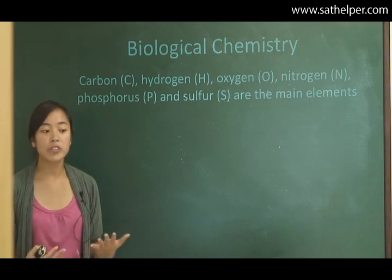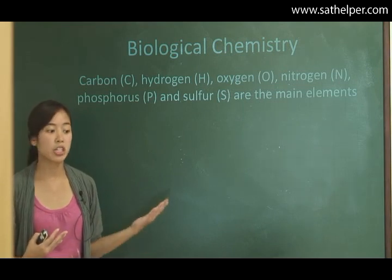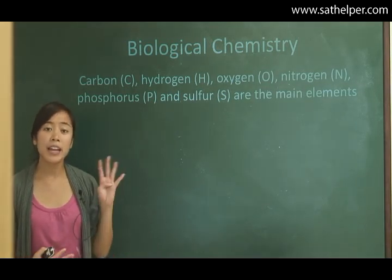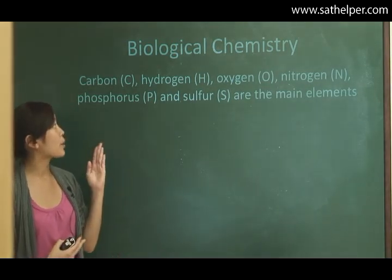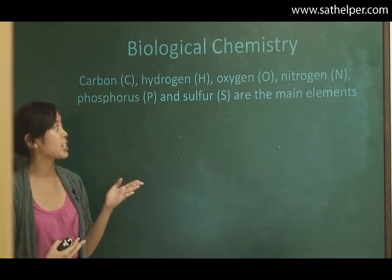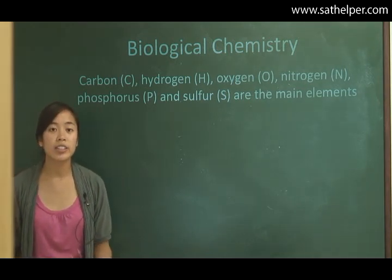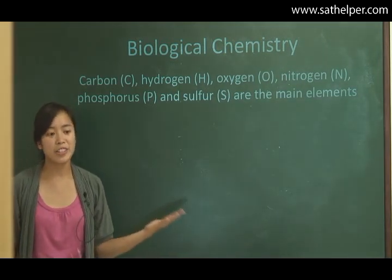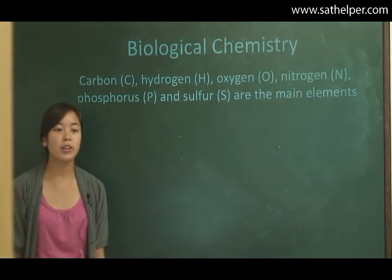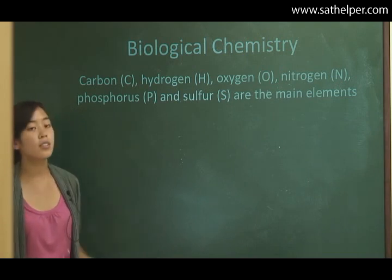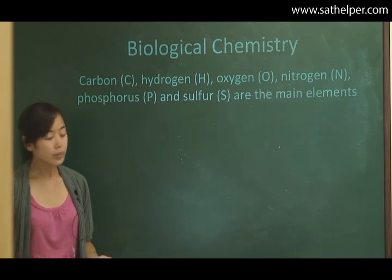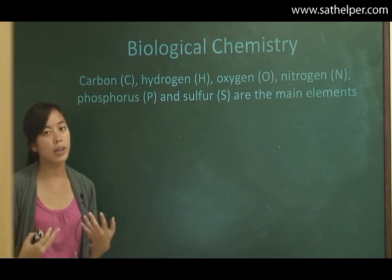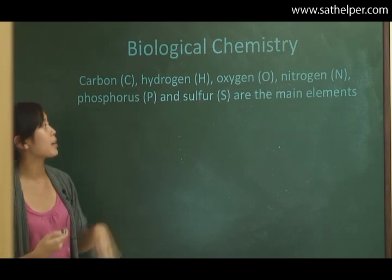Carbon, hydrogen, oxygen, nitrogen, phosphorus, and sulfur are the main elements. The main four are actually carbon, hydrogen, oxygen, and nitrogen. In human beings, for example, oxygen makes up 65% of our body weight. So, carbon, hydrogen, oxygen, nitrogen, most important main elements. Phosphorus and sulfur are also there, and also important. There are a lot of other elements that are also involved in our chemical processes, but these are the main ones.